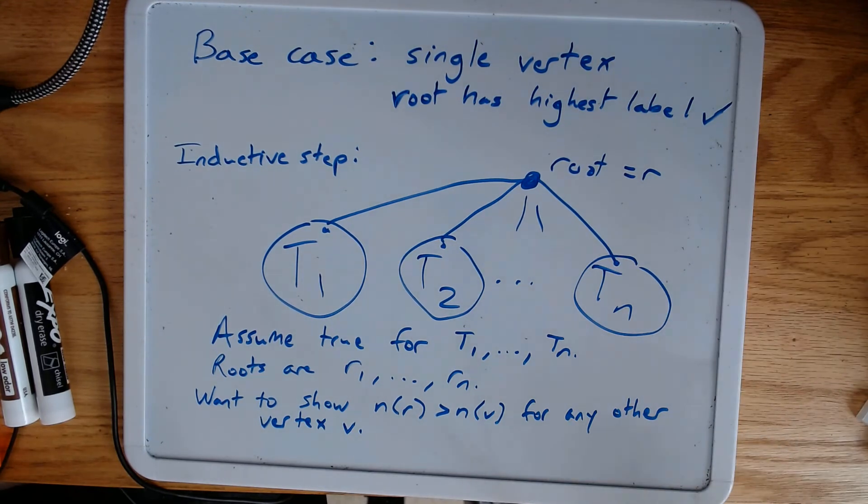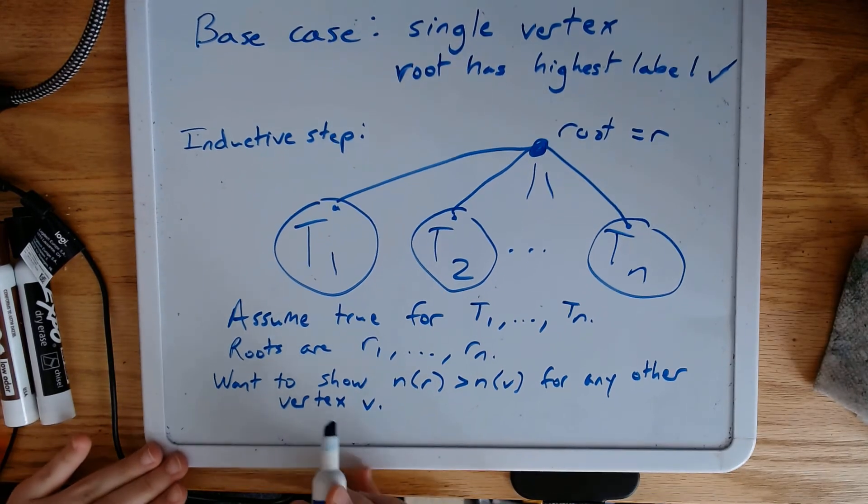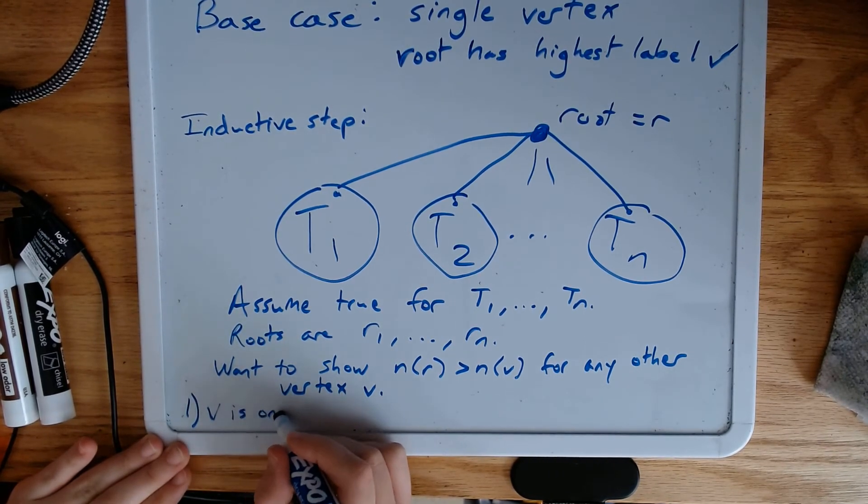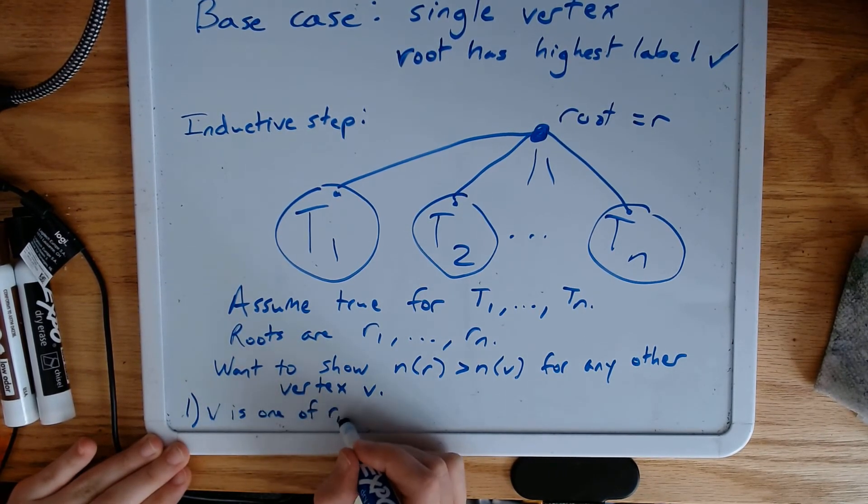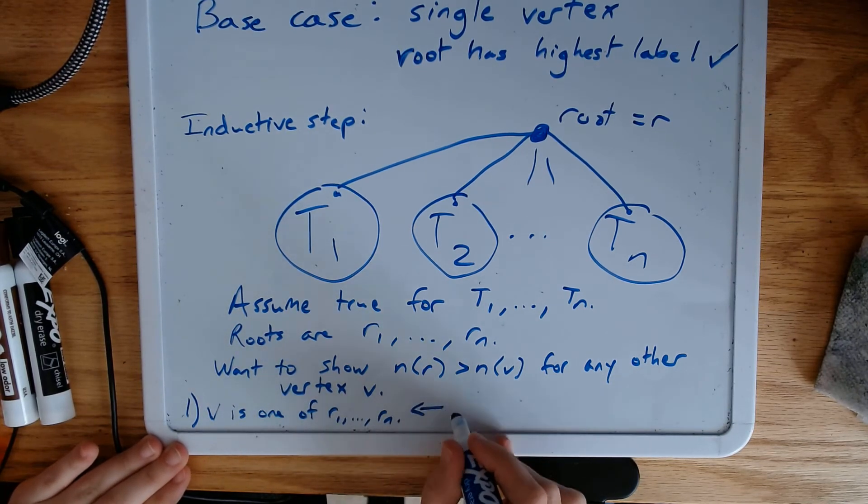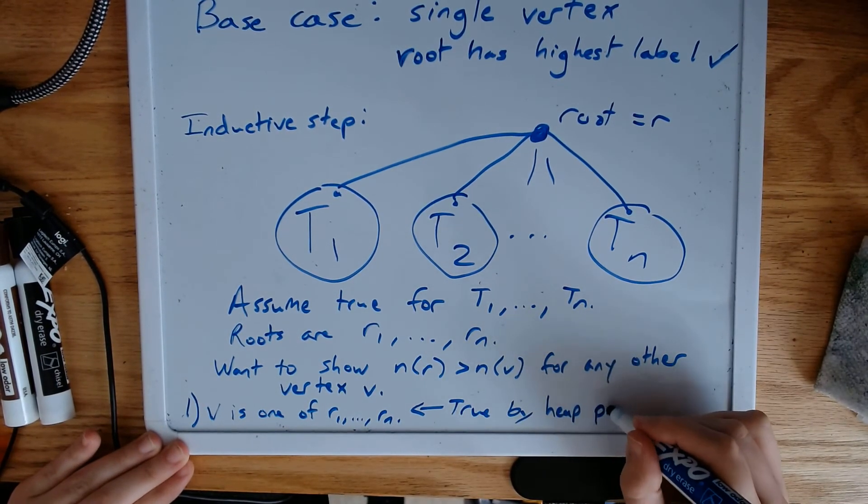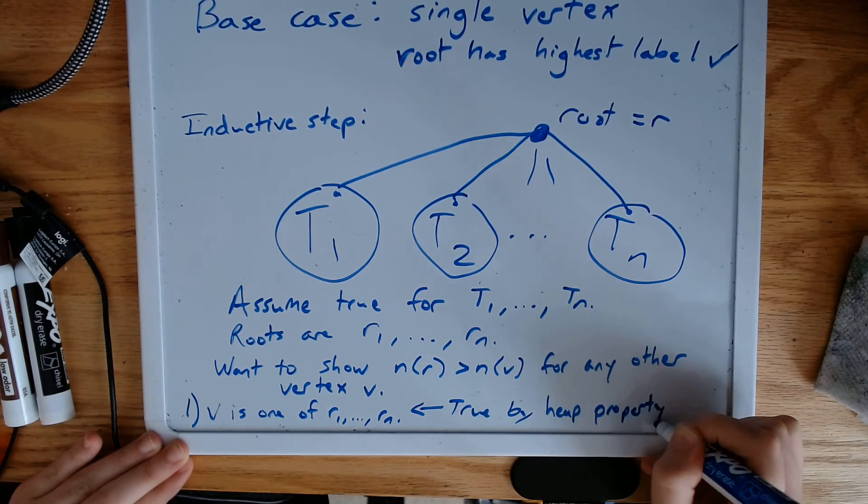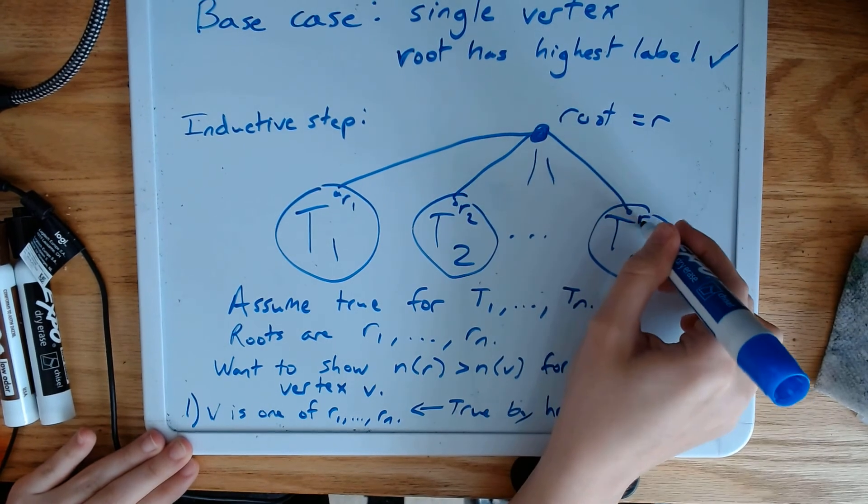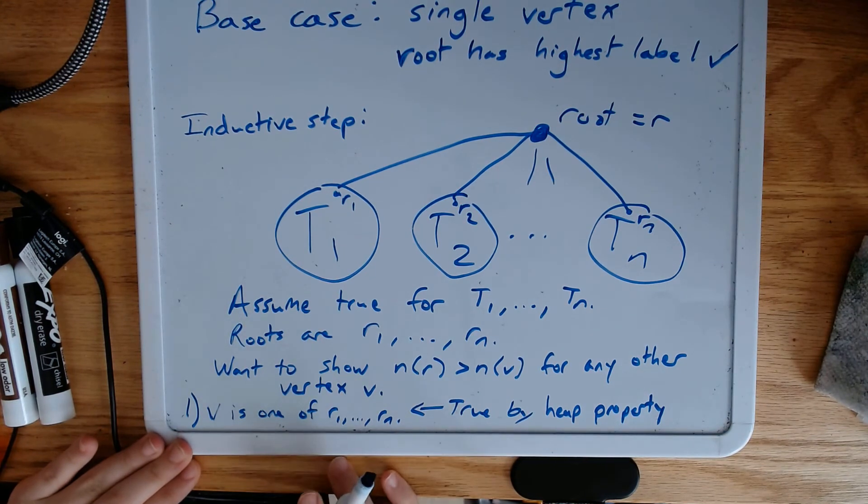Well, we have a couple of cases here. Either, let's say the first case, v is one of r1 through rn. In this case, this is true by our heap property. Right? These roots are r1, r2, up through rn. They're all connected to r. They're its children. So this is true by the heap property.